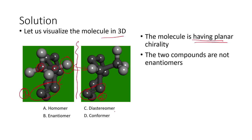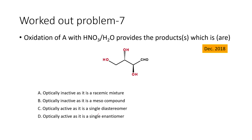These are basically diastereomeric compounds because there is no object-mirror image relationship. Two compounds having no object-mirror image relationship and which are also non-superimposable are called diastereomers. So the relationship between the two given compounds is basically diastereomers.